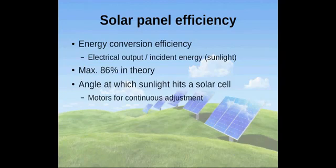The maximum theoretically possible conversion efficiency for sunlight is 86%. The actual energy conversion efficiency of a solar panel depends on many different factors.